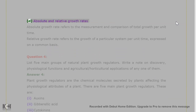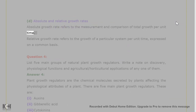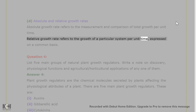D. Absolute and relative growth rates: absolute growth rate refers to the measurement and comparison of total growth per unit time. Relative growth rate refers to the growth of a particular system per unit time, expressed on a common basis.